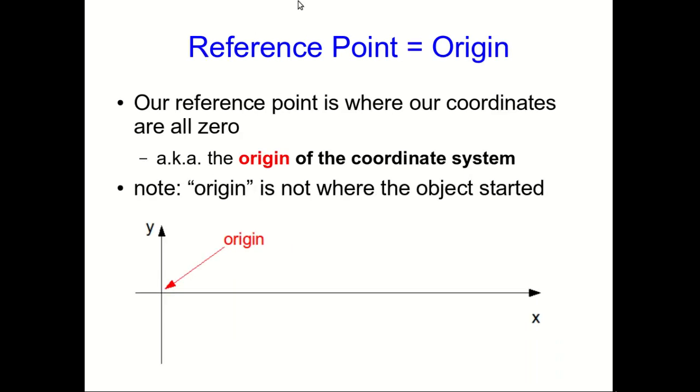A couple of minutes ago in the example with Sam and position, I used Sydney as a reference point for giving a position. Normally what we do is we set axes, and then the origin of our coordinate system is our reference point. Now be careful, many students, when they hear the word origin, they think it means wherever the object whose motion you're describing started. That's not what we mean. Origin is the point where your two axes in your coordinate system cross each other.